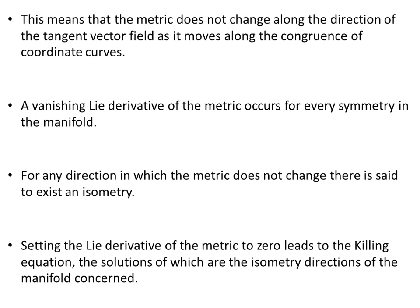If the Lie derivative vanishes, then the metric must be independent of the coordinate lambda. This means the metric does not change along the direction of the tangent vector field as it moves along the congruence of coordinate curves. A vanishing Lie derivative of the metric occurs for every symmetry in the manifold, and for any direction in which the metric does not change, there is said to exist an isometry. Setting the Lie derivative of the metric to zero leads to the Killing equation, the solutions of which are the isometry directions of the manifold.